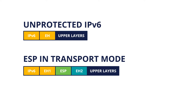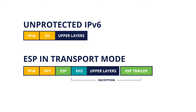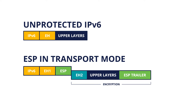When ESP is providing confidentiality, the bytes of the packet that go after the ESP header are encrypted. Also, an ESP trailer is added in order to be able to decrypt it at the destination, helping the algorithm to know when to stop.